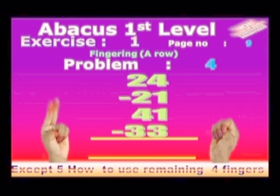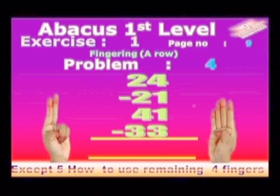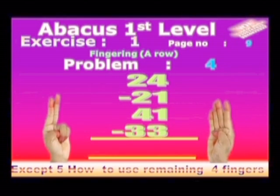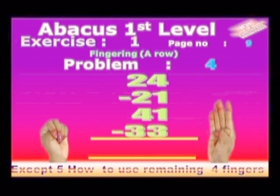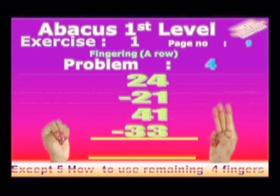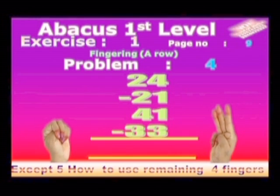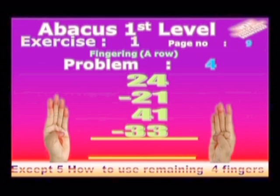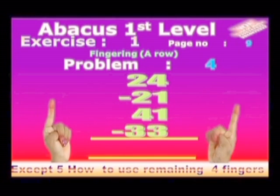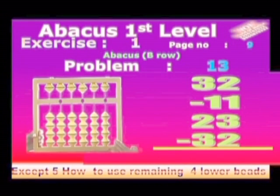Problem no. 4. Take 24: 2 in left hand, 4 in right hand. Minus 21: 2 in left hand, 1 in right hand. Add 41: 4 in left hand, 1 in right hand. Minus 33: 3 in left hand, 3 in right hand. Answer is 11.